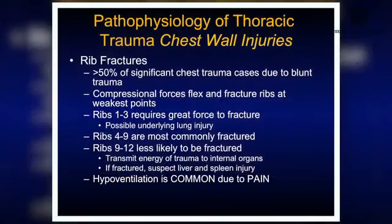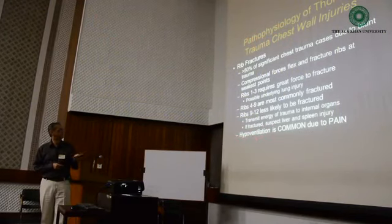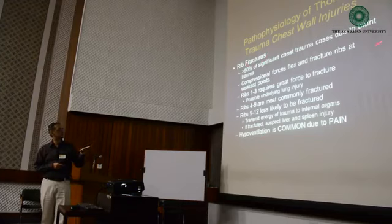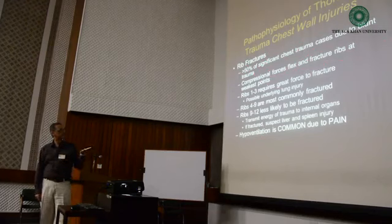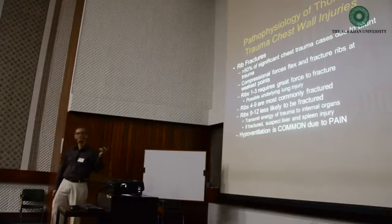Ribs one to three require great force to fracture and carry a chance of underlying lung injury. Ribs four to nine are most commonly fractured. Ribs nine to twelve are less likely to fracture. When lower ribs are fractured, suspect liver and spleen injuries, as the energy of trauma is transmitted to internal organs. Hypoventilation is quite common due to pain, so ventilation is always somewhat compromised. Fifty percent of significant chest trauma cases are due to blunt trauma.